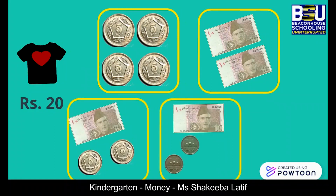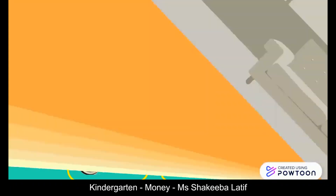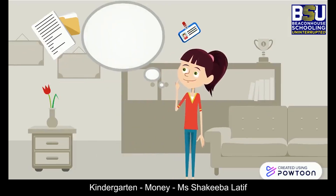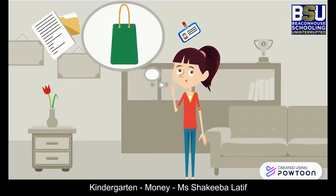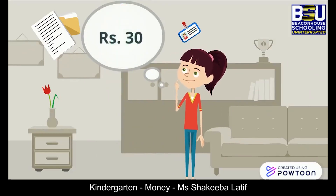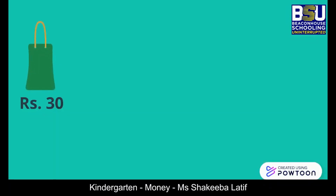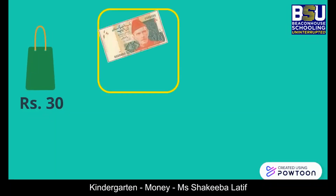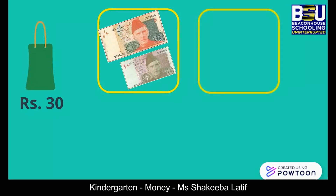Or she can pay with one 10-rupee note and five 2-rupee coins. She also wants a new bag worth 30 rupees for her mother. For this, she can pay with a 20-rupee note and a 10-rupee note. Or, since two 5-rupee coins make ten, she can use two 5-rupee coins and one 20-rupee note.